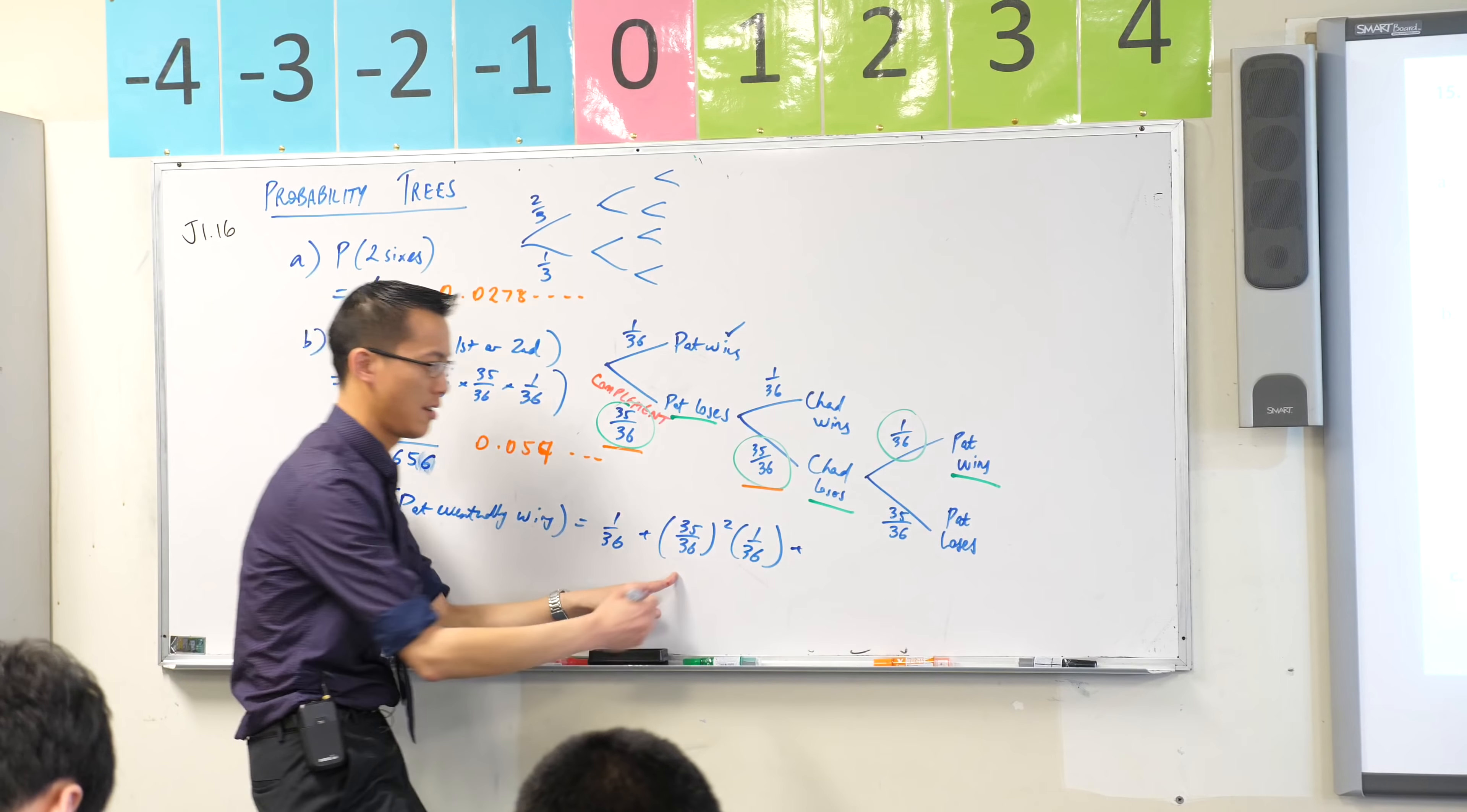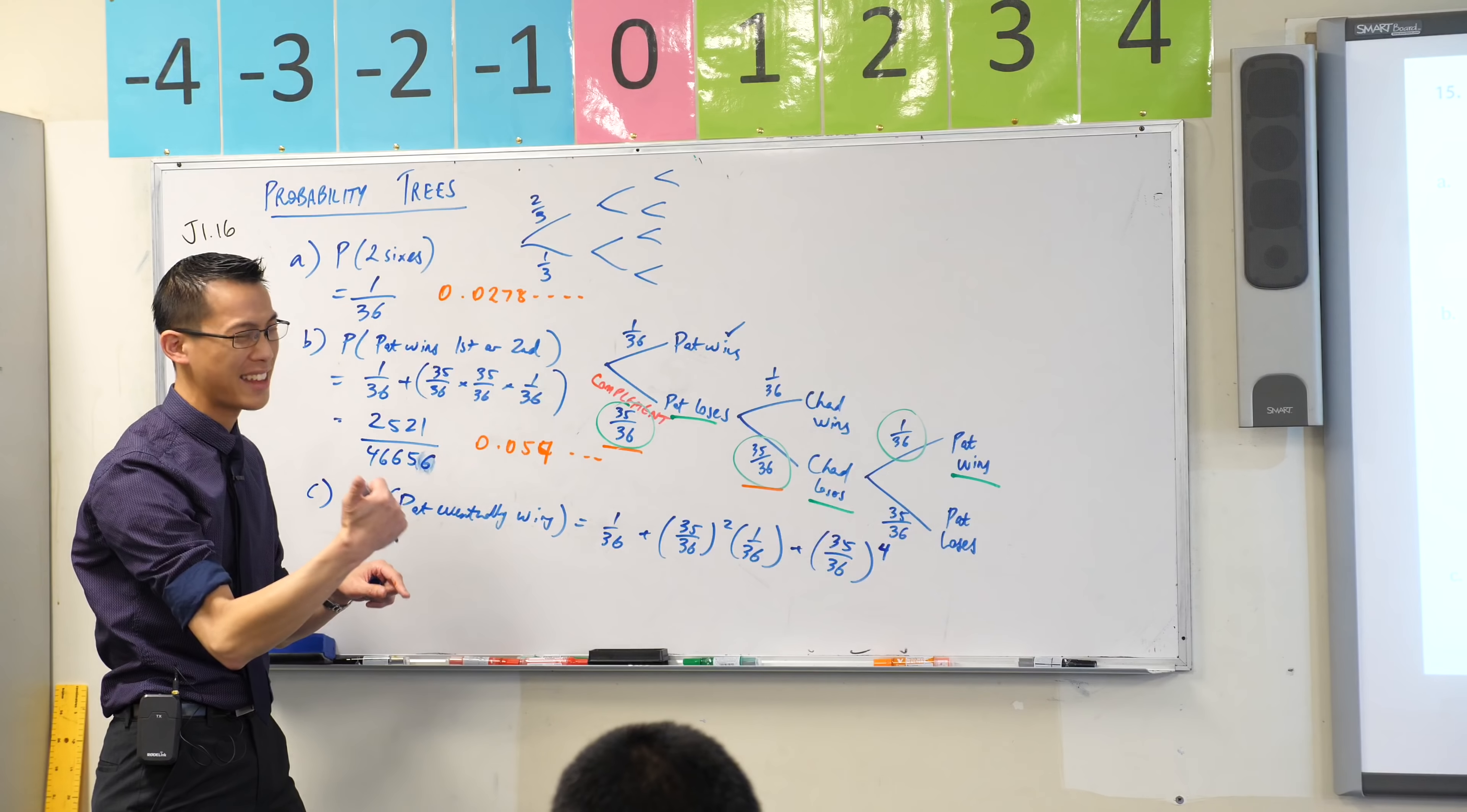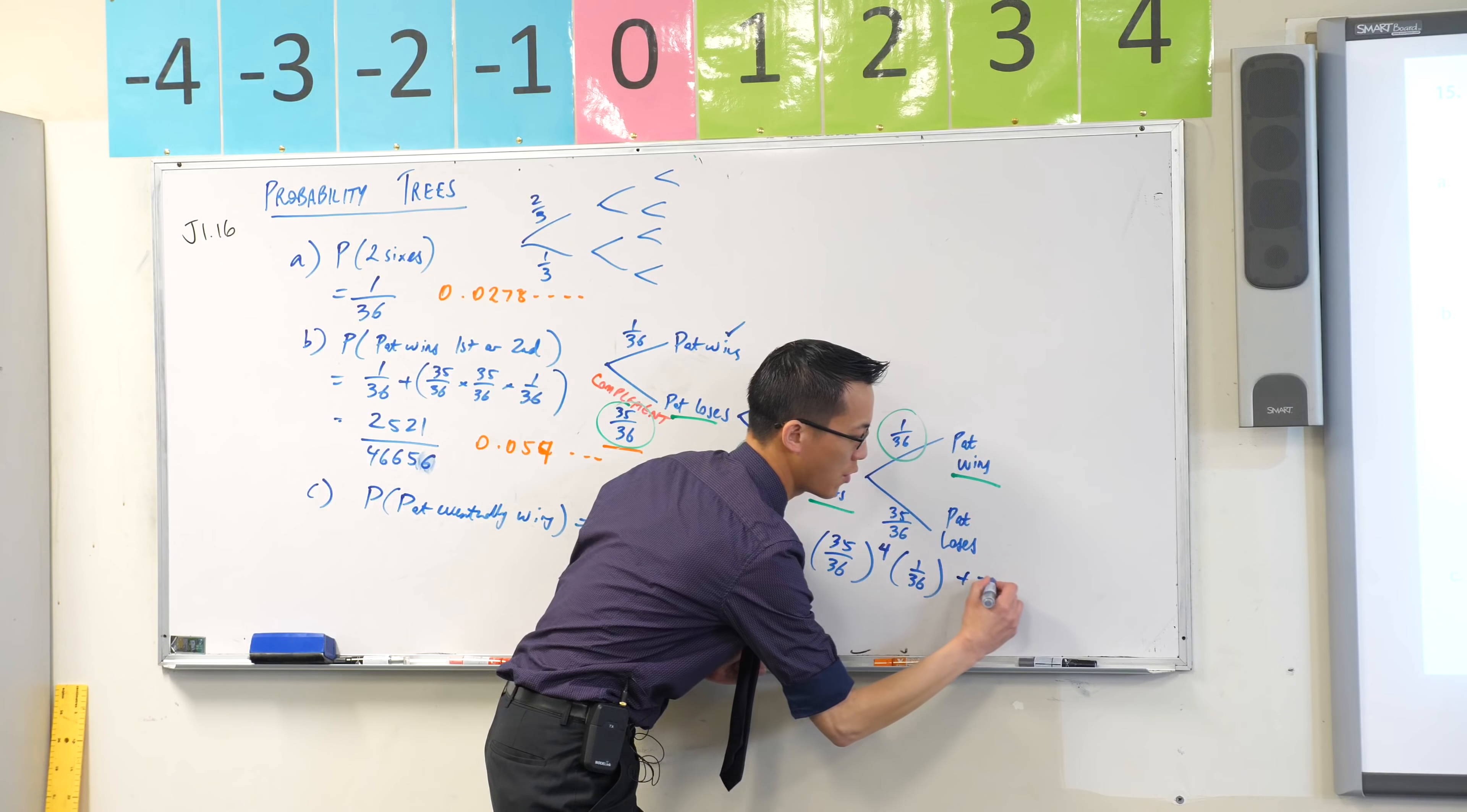So here's those two losses, but I want to do them a couple more times, right? So instead of that squared, I'm going to have that to the power of 4. It's an even number because Chad has to lose and then Pat has to lose. Then Chad has to lose and then it comes back to him. And then finally it ends on a 1 out of 36. What does that represent? Well, the 1 out of 36 always represents the actual completion of the game. He wins, right?